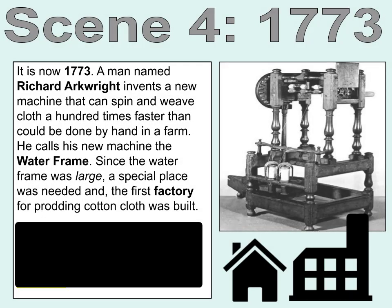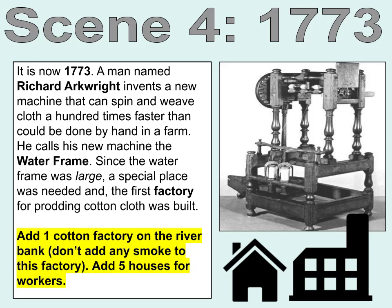Scene 4. It is now 1773. A man named Richard Arkwright invents a new machine that can spin and weave cloth a hundred times faster than could be done by hand on a farm. He calls his new machine the water frame. Since the water frame was large, a special place was needed, and the first factory for producing cotton cloth was built. Add one cotton factory on the riverbank — don't add any smoke to this factory. Then add five houses for workers.